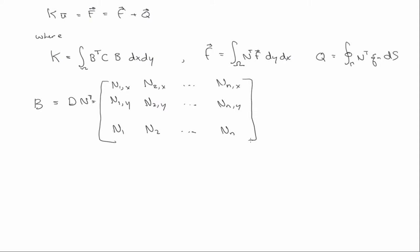Okay, so that's the finite element formulation. The last thing we need to do is just briefly discuss how we come up with the element shape functions. And so let's consider what we call a constant strain triangle.